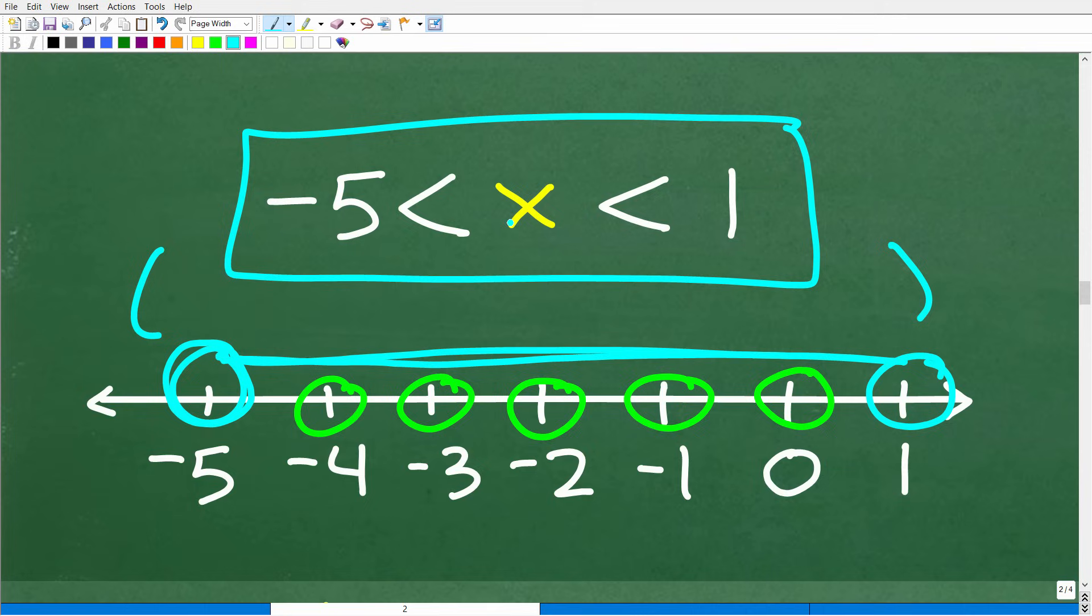The question is all possible values for x, and x is an integer. What integers do we have that are greater than negative 5 and less than 1? Well, we can kind of see it here. Greater than negative 5 and less than 1, we have negative 4, negative 3, negative 2, negative 1, and then 0 is an integer as well.